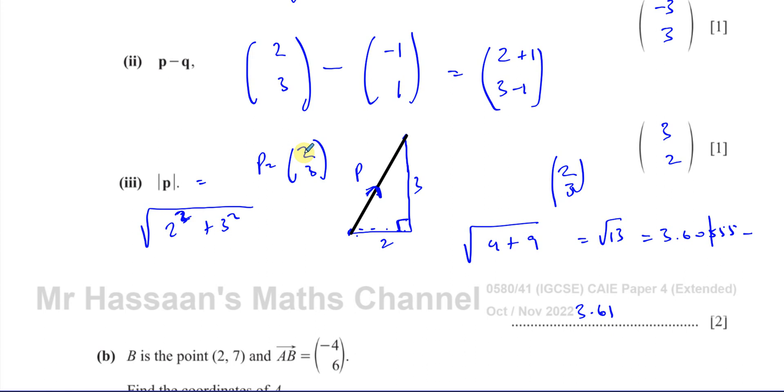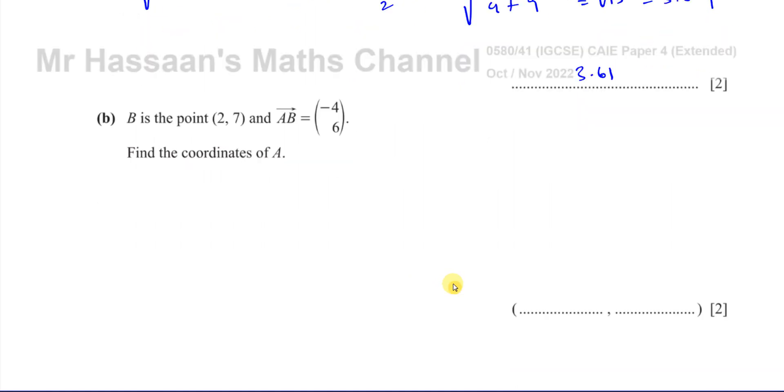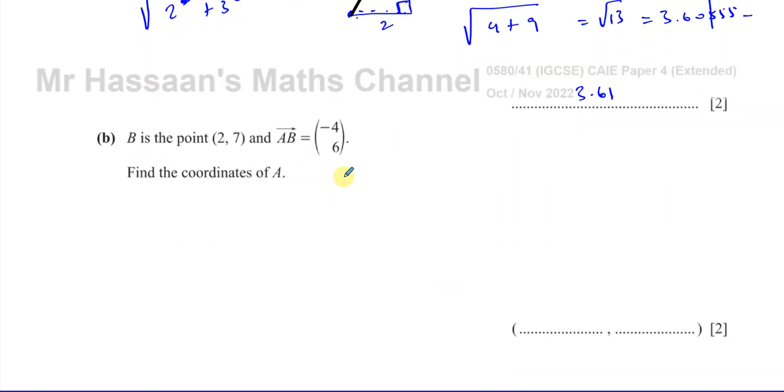Then part B says b is a point 2, 7 and vector AB is minus 4, 6. Find the coordinates of A. So this is not related to the first question at all. Here we've got a point and it's telling us to get from A to B, you've got to go minus 4, 6. So this is like the end of this journey. This journey tells you how to get from A to B and this tells you what B is. So we've got to kind of like trace our steps backwards.